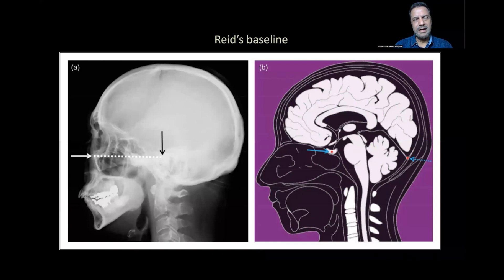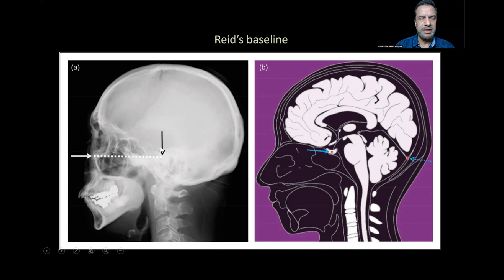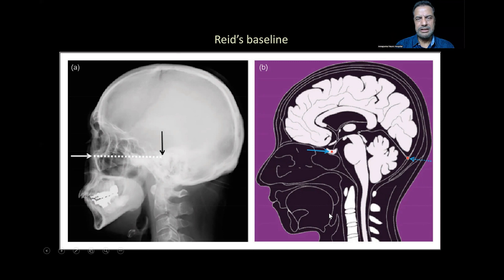MRI is taken through a baseline created from the inferior wall of the orbit to the external auditory meatus on X-ray. When you cut that on MRI, then approximately that will be from the middle of the pituitary gland to the posterior aspect of the tentorium. That will be the Reid's baseline, and then parallel to the baseline above and below, we cut continuously.